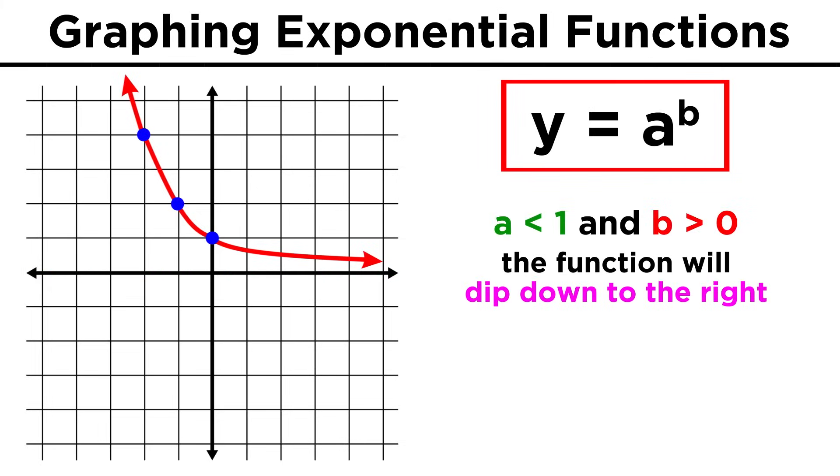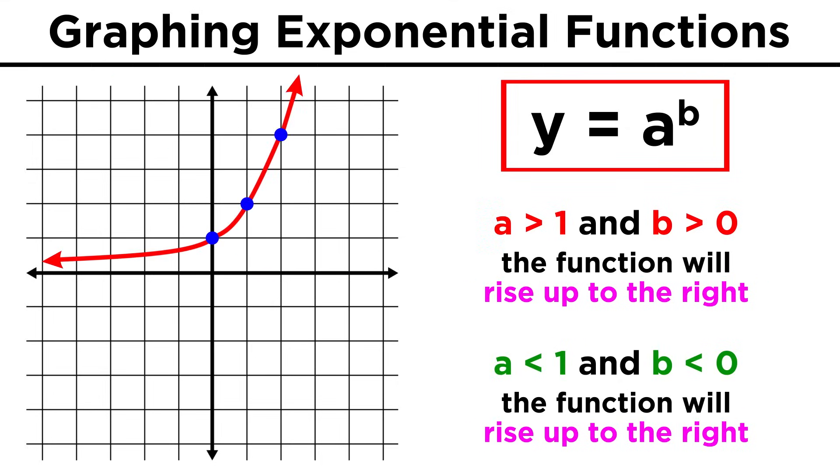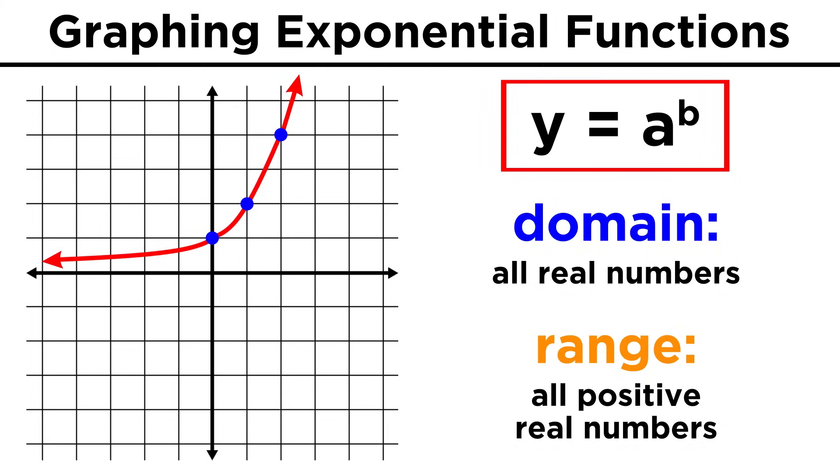This means that for exponential functions, if the base is less than one and the exponent is positive, or if the base is greater than one and the exponent is negative, the function dips down to the right like this. If the base is greater than one and the exponent is positive, or if the base is less than one and the exponent is negative, the function will rise up to the right, like the previous example. But in both cases, the domain is all real numbers, and the range is all real numbers greater than zero.